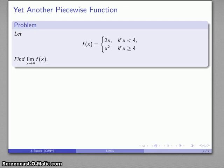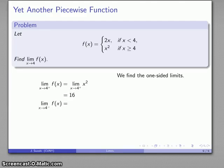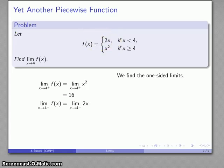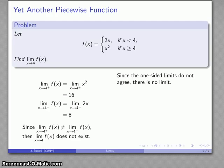Let's look at one more example with another piecewise function where the break is at x = 4, and we want the limit as x approaches 4. Finding the limit from above: if x > 4, I use x², and as x gets close to 4, that's 4² = 16. For the limit from below: if x < 4, I use 2x, and as x gets close to 4, that's 2(4) = 8. We have a problem — the limit from above is 16, the limit from below is 8, and the one-sided limits do not agree.